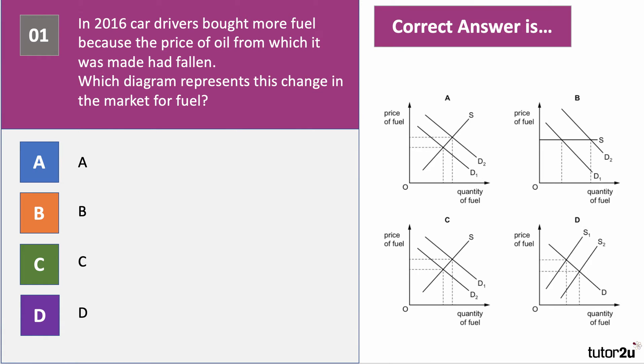Question one. In 2016, car drivers bought more fuel because the price of oil, from which fuel is made, has fallen. Which diagram — A, B, C or D — represents this change in the market for fuel? Press the pause button, have a think about your answer, and then press play when you want to go through the answer together.